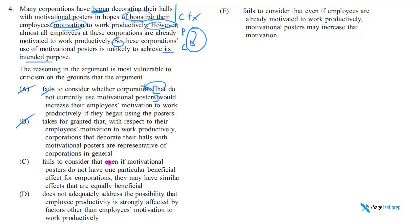C says: fails to consider that even if posters do not have one particular benefit, they may have similar or equally beneficial effects. Sure, employees might be pleasant to look at them, but that has nothing to do with where our argument is weak. Here's the key distinction between A and C: A is wrong because it fails to describe the argument accurately — it's not descriptive. C does describe the argument, but the fact that the argument failed to consider this thing is not where the argument is actually weak. That's what makes C incorrect.